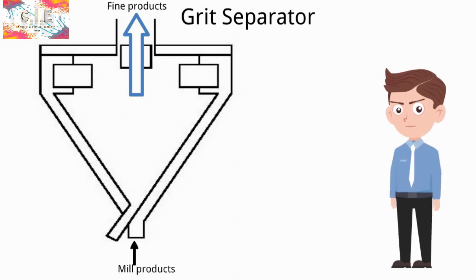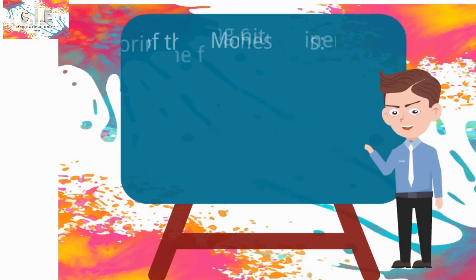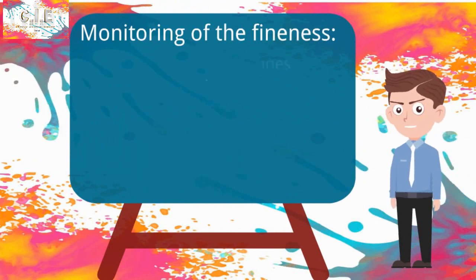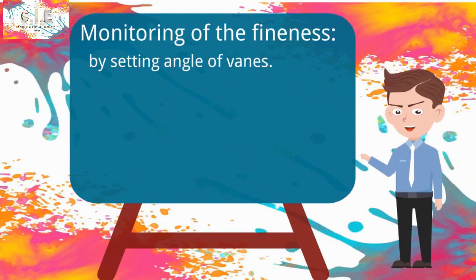While the coarse will leave the cone from the bottom and be carried out with screw conveyor to regrinding. Fineness in grid separator can be adjusted by setting angle of vanes.